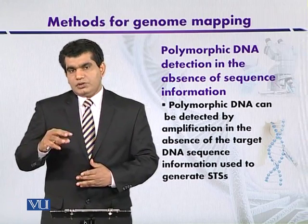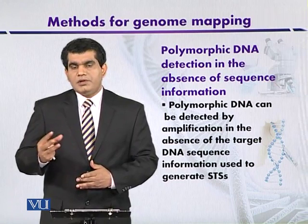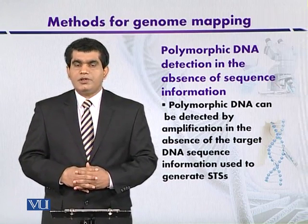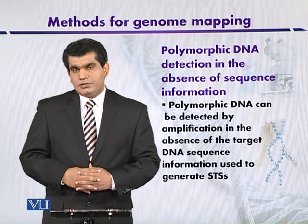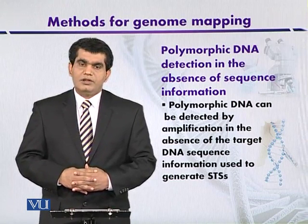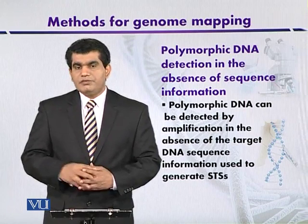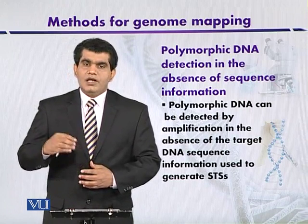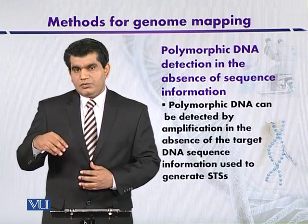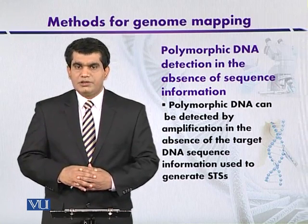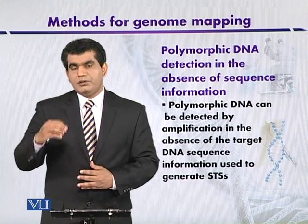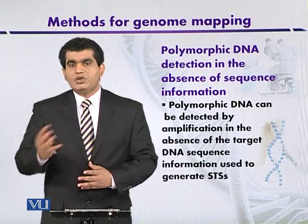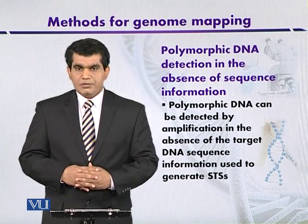The sequence length of the primer is around 10 nucleotide base pairs, and the GC content is managed. It ranges from 50 to 80%. Another constraint to take into consideration while developing primers for RAPD is that there should be no palindromic sequences in the primer.